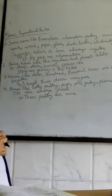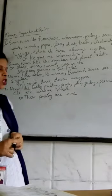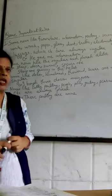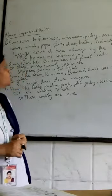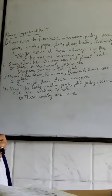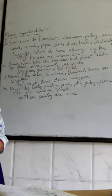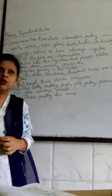First rule: some nouns like furniture, information, poetry, scenery, machinery, work, wood, paper, glass, dust, traffic, electricity, food, grass, language, advice, etc.